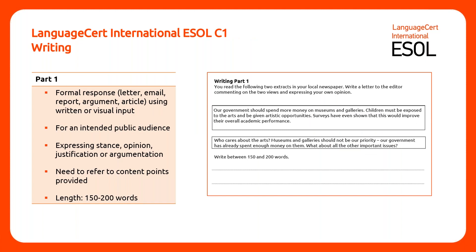At C1 level, part one requires them to write a formal response such as a letter, email, report, argument or article, using written or visual input for an intended public audience, expressing stance, opinion, justification or argument. Candidates need to refer to the content points provided and are required to produce a text between 150 to 200 words.